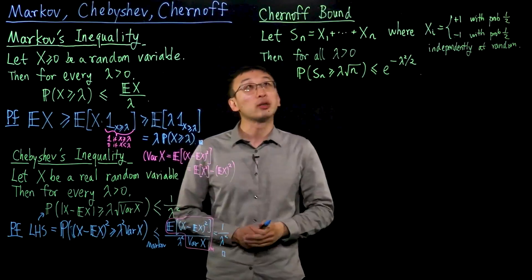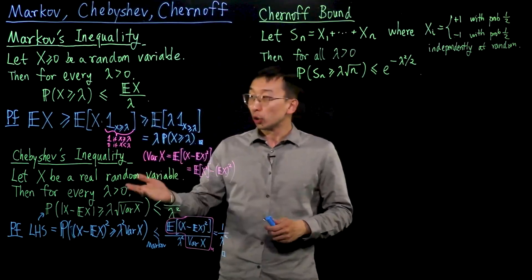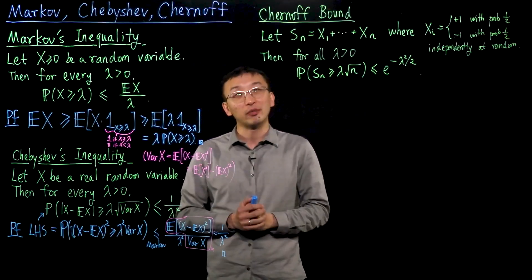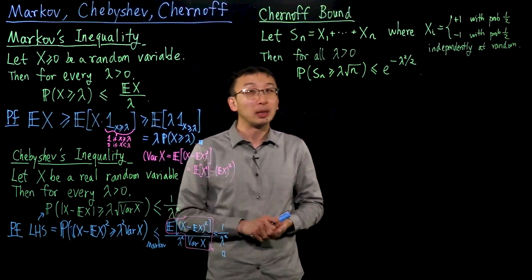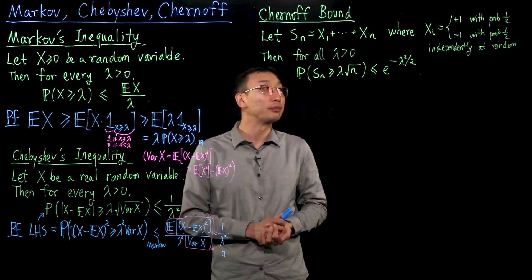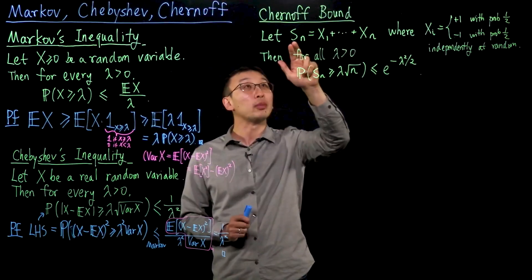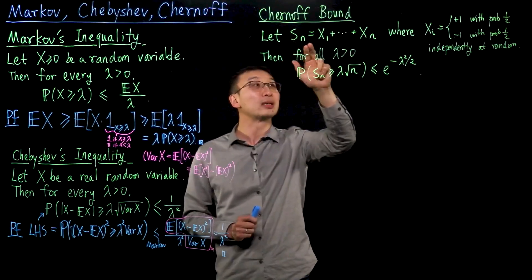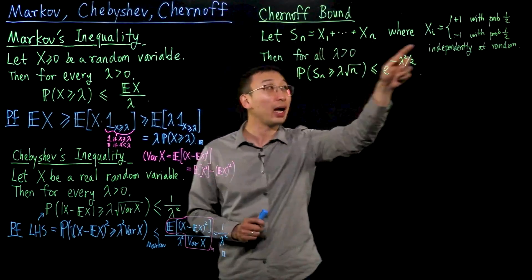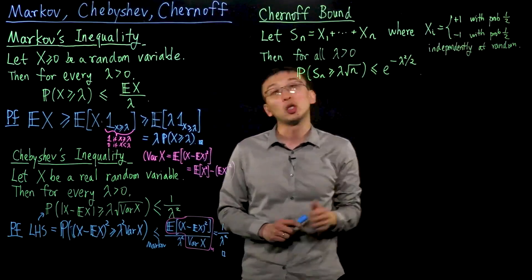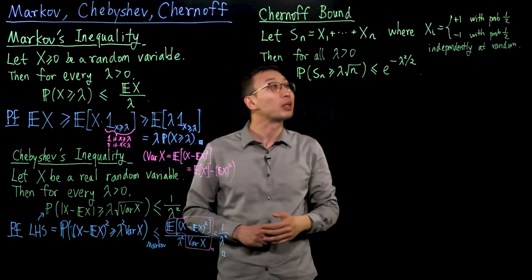The third inequality is known as the Chernoff bound. Unlike the earlier inequalities, which apply to fairly general random variables, the Chernoff bound is for a more specific setting: a sum of independent random variables. More specifically, let S sub n be a sum of n different plus-or-minus ones, where each x_i is plus one with probability one-half and minus one with probability one-half, all chosen independently at random.